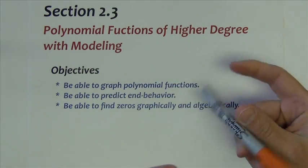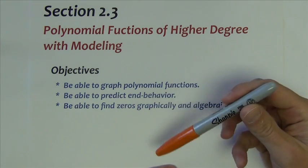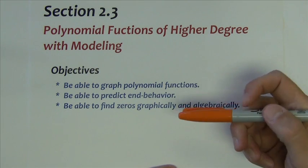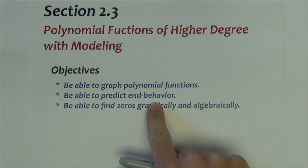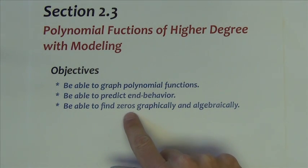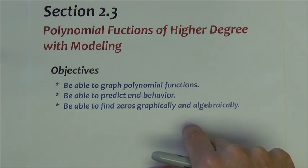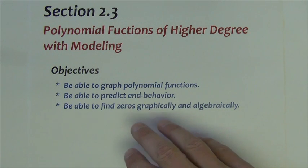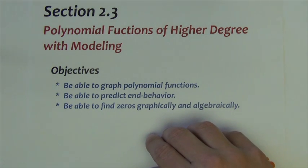Section 2.3 is titled Polynomial Functions of Higher Degree with Modeling. In this section, we're going to look at the graphs of polynomial functions of higher degree — some properties and characteristics of those graphs, namely we'll look at the end behavior of those functions. We'll also look at zeros, how to find them graphically and algebraically. We'll also talk a little bit about extrema of polynomial functions, meaning the minimum and maximum that these functions have and how many they will have.